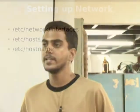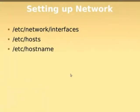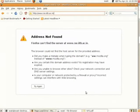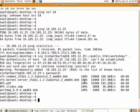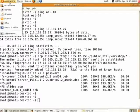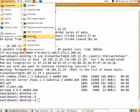For setting up a network there are three files. We have to enter the specifics in each of these files, and I will show them one by one. You open a terminal by going to Applications, Accessories, and Terminal.